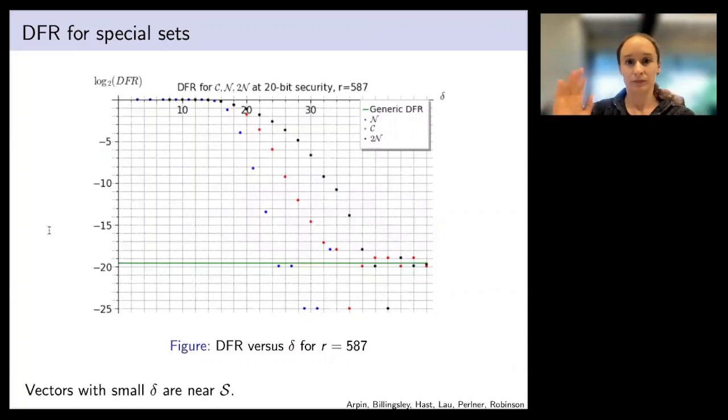Here we have a decoding failure rate graph looking at error vectors of weight 18 that are different distances from C, N, and 2N. You'll notice up here we have delta, our distance. The closer our vectors are to the sets C, N, and 2N, the worse their decoding failure performance. Up here we have terrible decoding failures, and over here to the right we have basically the security parameter that we would expect. I have graphed here the generic DFR for this particular R value just so you can compare. It's clear from this graph that when we are close to one of these sets C, N, and 2N, our decoding process is going to fail more often than from the generic average DFR.